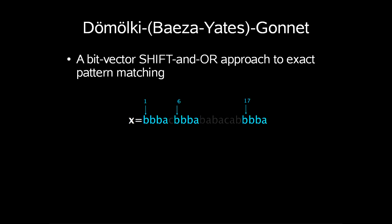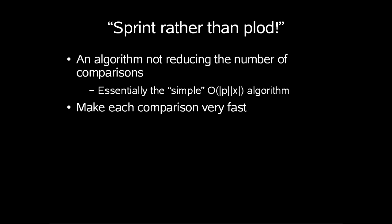This is a bit-vector shift-and-OR approach to exact pattern matching. It is an algorithm that does not attempt to reduce the number of comparisons. It is actually essentially the simple order length of pattern times length of string running algorithm. Instead, the trick is to make each comparison uniquely fast.